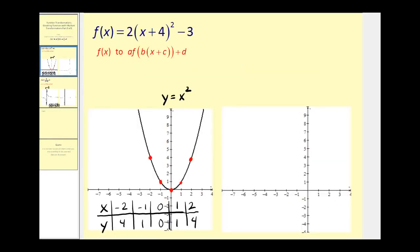On this first function we have f of x equals two times the quantity x plus four squared minus three. The first thing we should recognize is that the parent function would be y equals x squared. The graph is already provided here because the idea behind graphing transformations is that you know how to graph the parent functions.